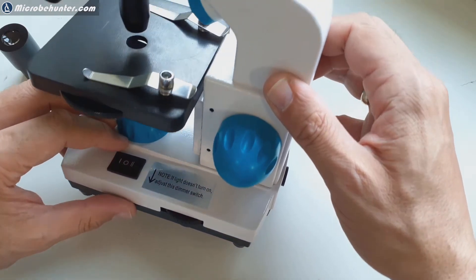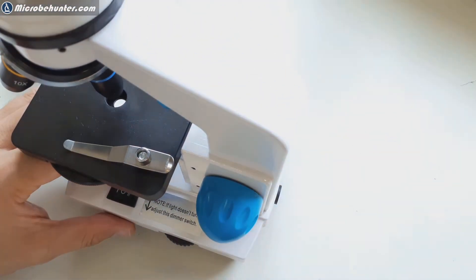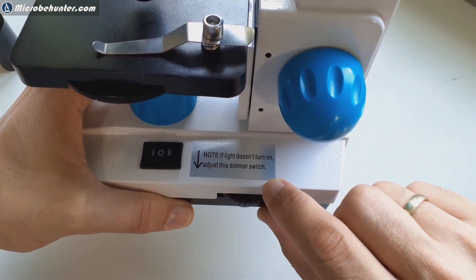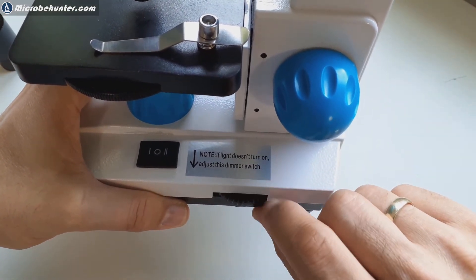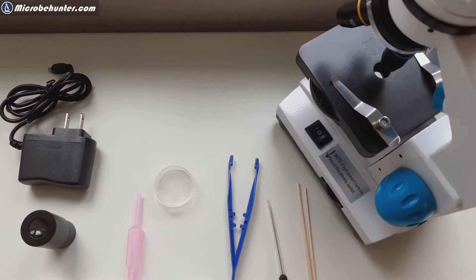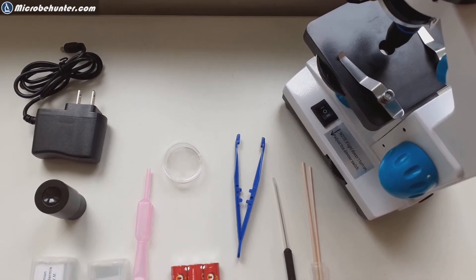And I also found that there was a sticker note, light doesn't turn on adjust. If the light doesn't turn on you have to adjust the dimmer switch so apparently some people switched on the light and forgot to turn up the dimmer and therefore it didn't work.